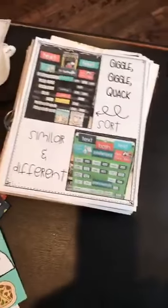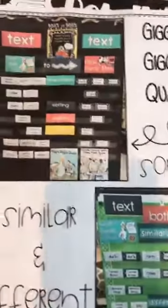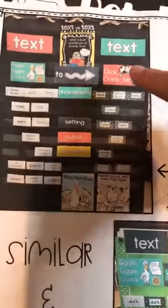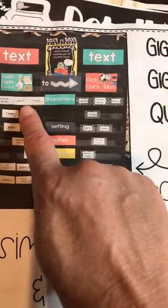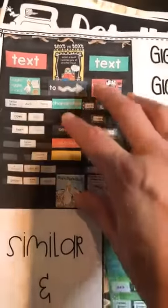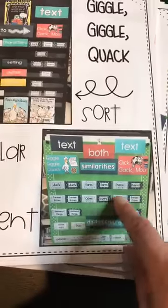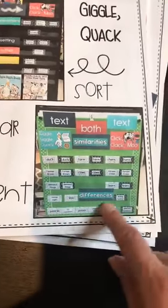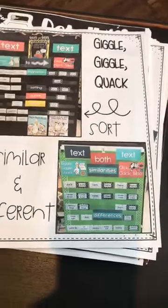Inside you have some discussion cards and the anchor chart. Day two would be all about comparing Giggle Giggle Quack to Click Clack Moo. I would start with the kids by filling out the text: who are the characters in Click Clack Moo, then in Giggle Giggle Quack, then the setting, the author, and the theme — any extra cards go at the bottom. Once we've created this chart, we bring the information over and sort it: what are the similarities go at the top, and what is different goes at the bottom. You're already beginning to kind of fill out a Venn diagram, even though it's not a real Venn diagram — you're sorting similarities and differences between the two stories.